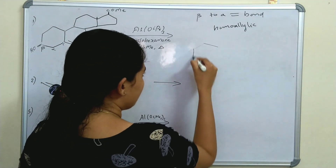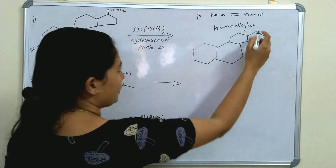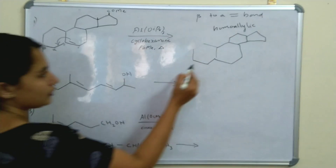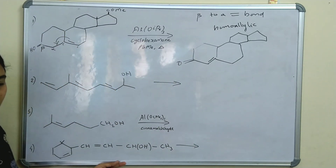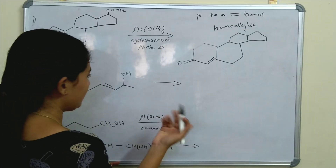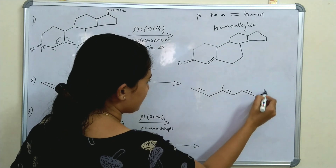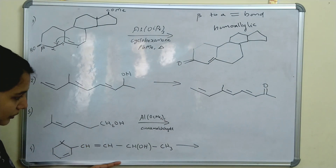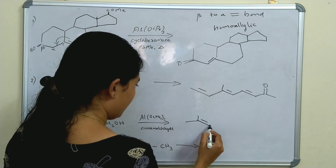So here this carbon is beta to a double bond carbon. This is alpha and this is beta, so it is a homoallylic alcohol. When a homoallylic alcohol undergoes Oppenauer oxidation, we get a ketone and the double bond shifts. So what will be the product? The double bond is shifted and the rest of the compound is the same.